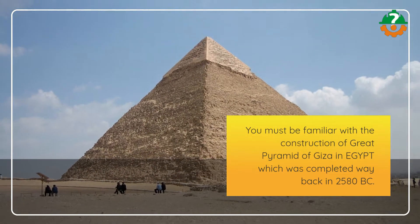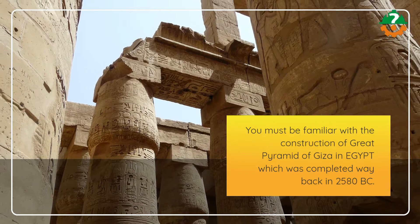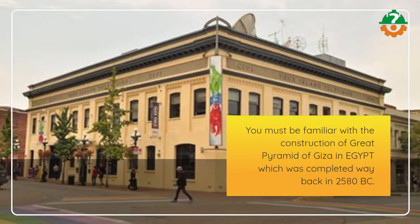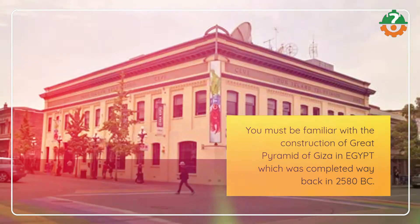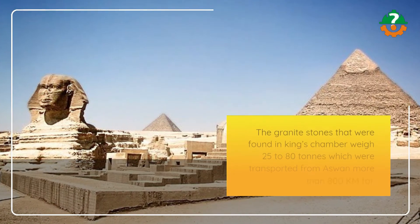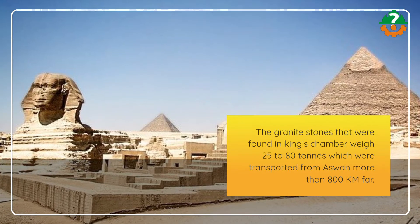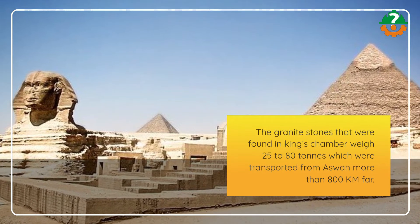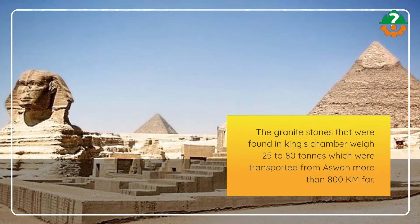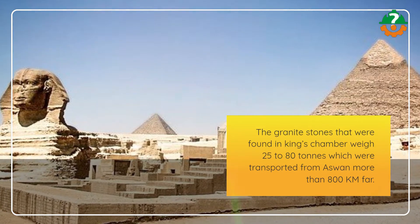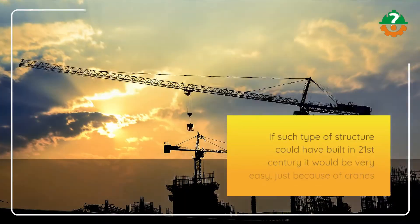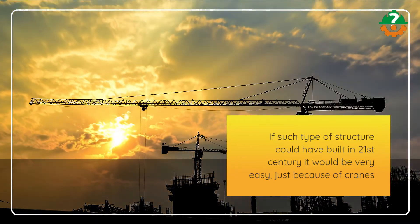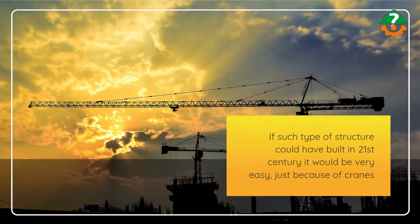You must be familiar with the construction of the Great Pyramid of Giza in Egypt, which was completed way back in 2580 BC. The granite stones found in the King's Chamber weighed 25 to 80 tons and were transported from Aswan, more than 800 km away. If such a structure were built in the 21st century, it would be very easy — just because of cranes.